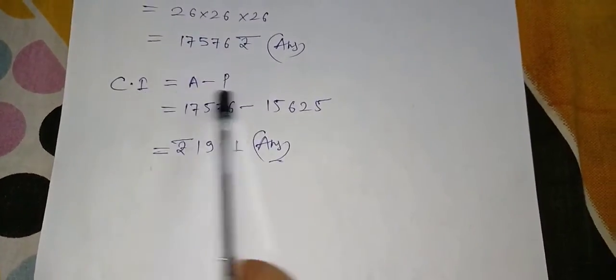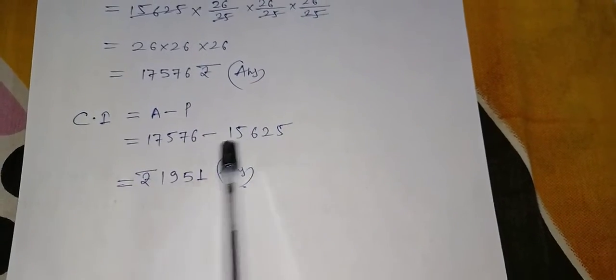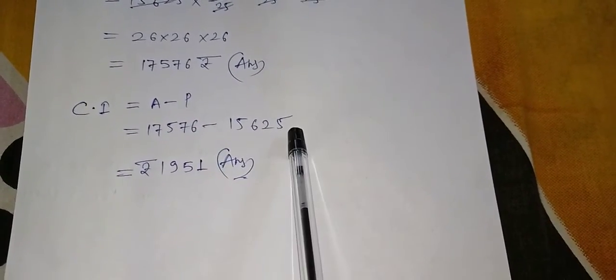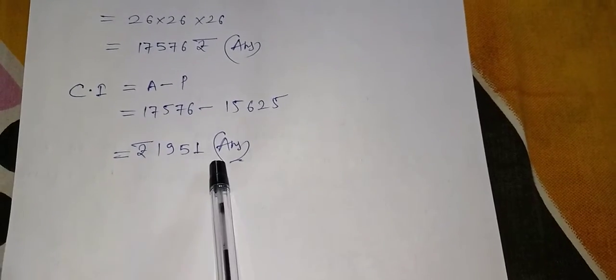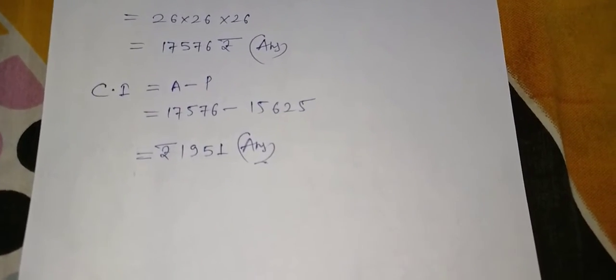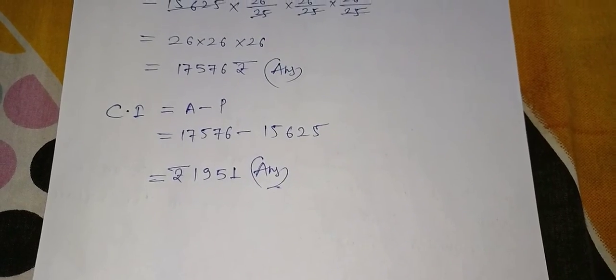Same formula I used here. Amount just now came, this is the amount. And principal is 15,625. And when we subtract, it is 1,951 rupees. So this is our compound interest. So practice this question, children. Thank you.